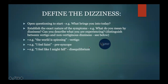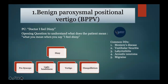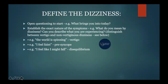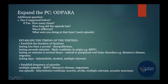When defining dizziness: 'the world is spinning' indicates vertigo, which is most important for this station. 'I feel faint' is presyncope. 'I feel like I might fall' suggests disequilibrium. Your opening question to the patient should be: 'What do you mean when you say you feel dizzy?' - to understand whether it is the room spinning, particularly when they tilt their head.